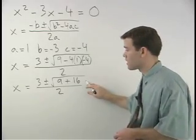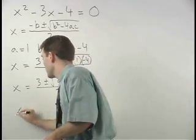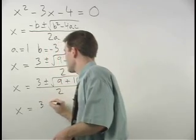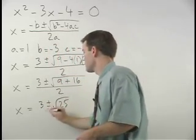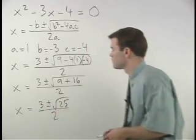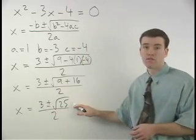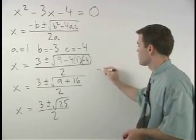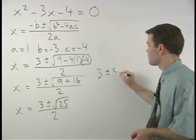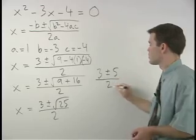Simplifying further inside the radical, we have x equals 3, plus or minus the square root of 25, over 2. And root 25 is just 5. So we have 3, plus or minus 5, over 2.